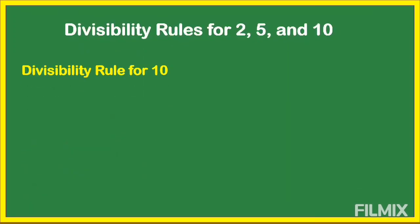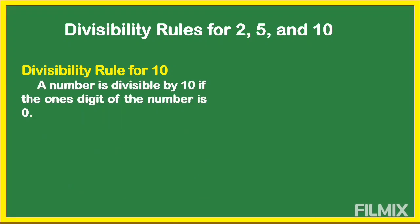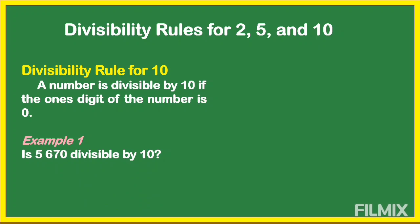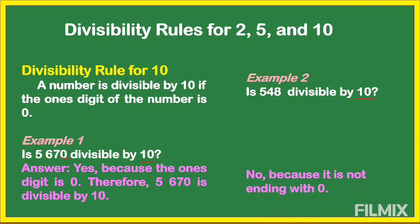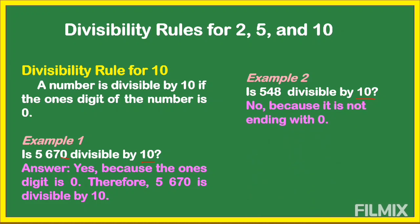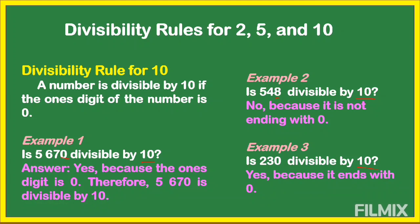Next is the divisibility rule for 10. How do we know that a number is divisible by 10? A number is divisible by 10 if the one's digit of the number is 0. For example: is 5,670 divisible by 10? Yes, because the one's digit is 0. Is 548 divisible by 10? No, because it does not end with 0 — it ends with 8. Is 230 divisible by 10? Yes, because it ends with 0.